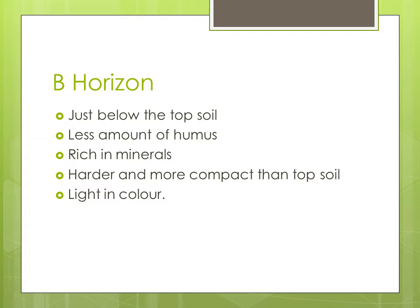B horizon is just below the topsoil. It contains less amount of humus and is rich in minerals. It is harder than the topsoil, that is the A horizon, and it is light in colour due to the less amount of humus in it.